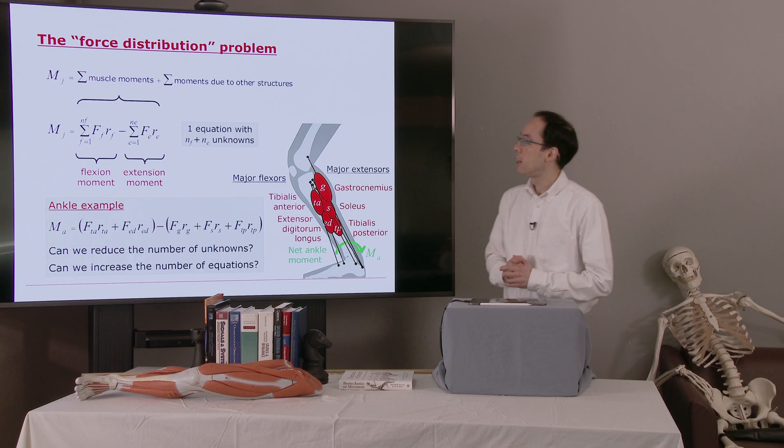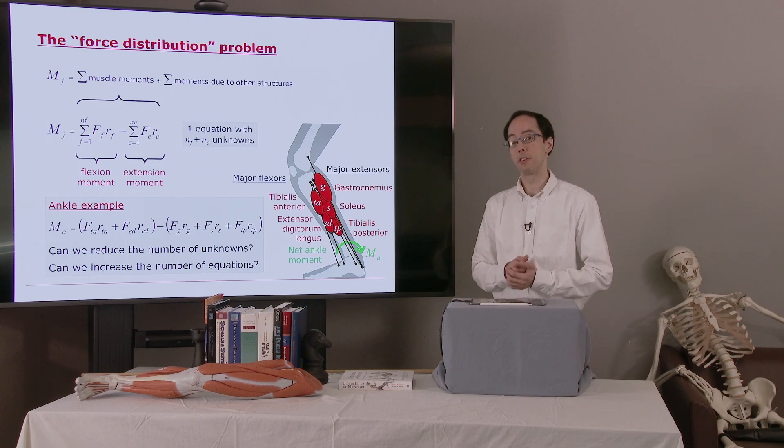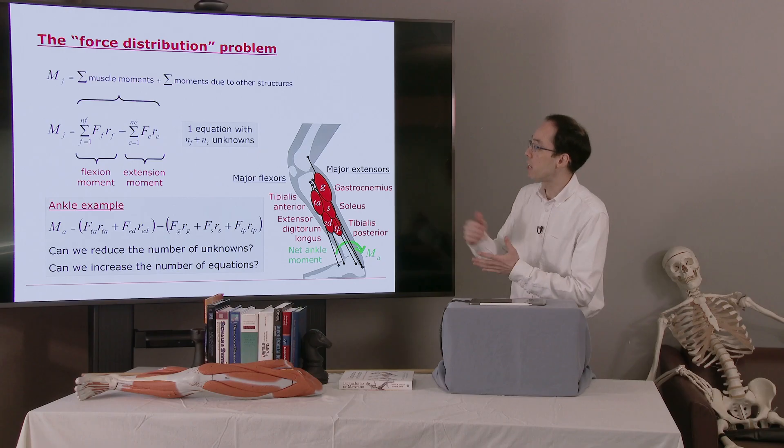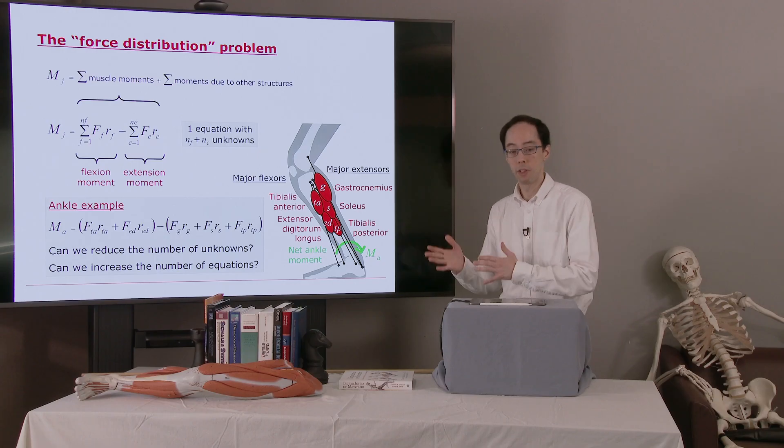One strategy is to make the number of equations equal to the number of unknowns, either by making assumptions that reduces the number of unknowns or adding equations. So in this specific example, at the ankle, how might we reduce the number of unknowns? Well, suppose we're generating a moment only in one direction. Maybe the muscles on the other side are not generating any force. Maybe we can increase the number of equations by assuming that all the muscles on one side of the ankle generate the same force or have the same excitation or have the same stress. In that case, we'd be making number of equations equal the number of unknowns.